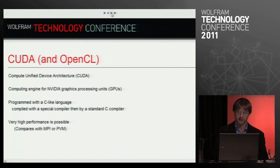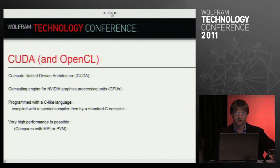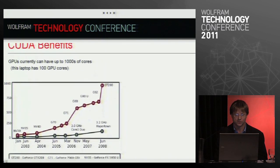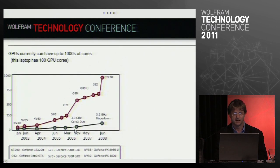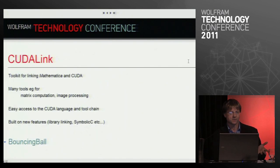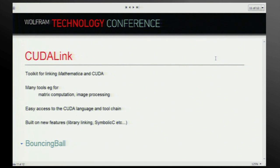Another feature using LibraryLink is our integration with CUDA and OpenCL. CUDA is a very parallel technology that uses the GPU — graphics processing units — on a computer, potentially giving very high performance. A graph shows how GPU core counts have grown enormously compared to regular CPUs. We added a CUDA link toolkit for linking Mathematica and CUDA, building specialized tools for matrix computation and image processing in a streamlined way — more traditional approaches involve lots of hairy C programming and awkward work. So that's my year in review of what was in Mathematica 8. Thank you.